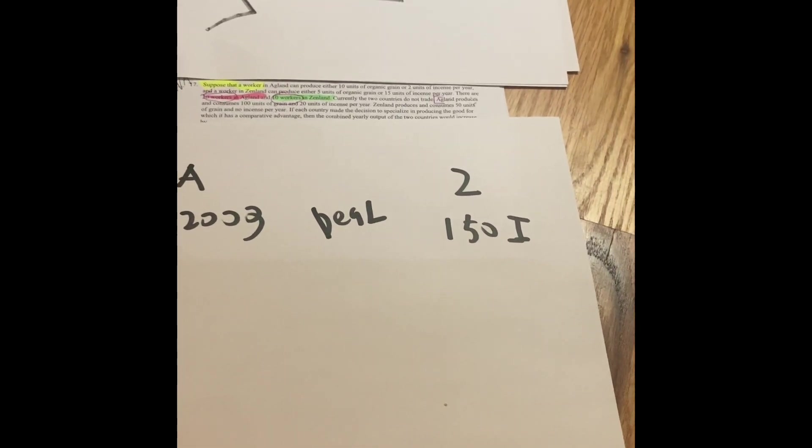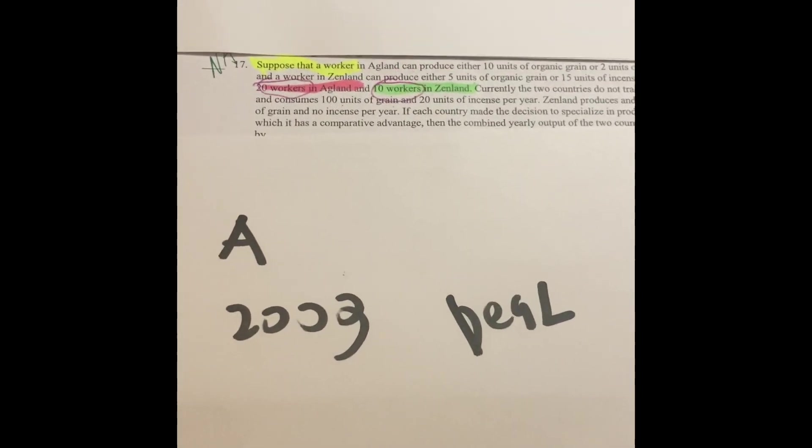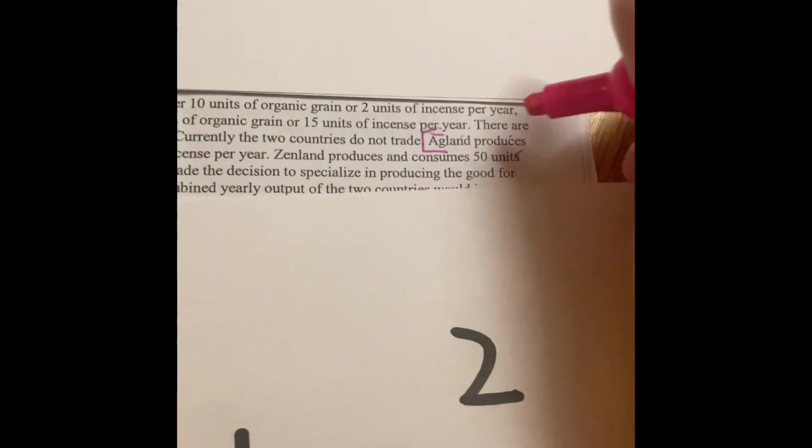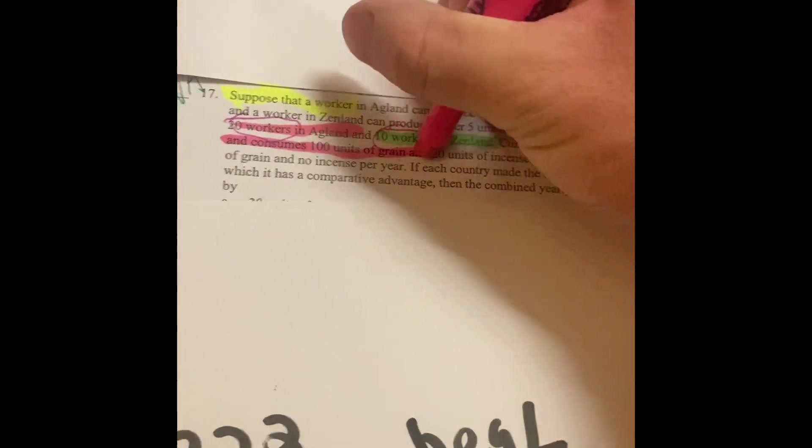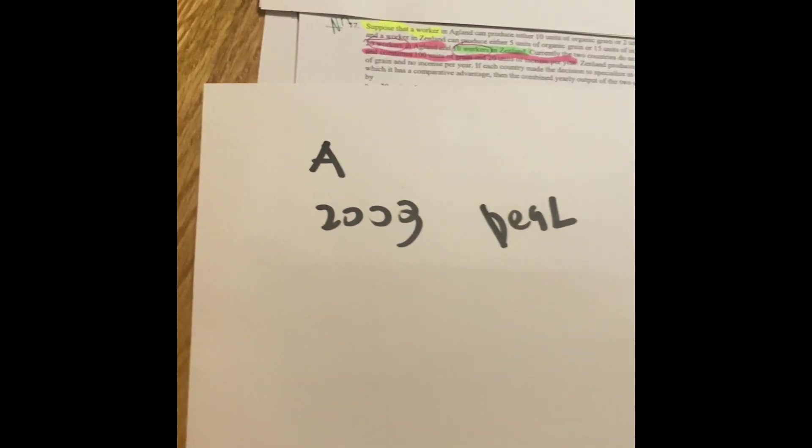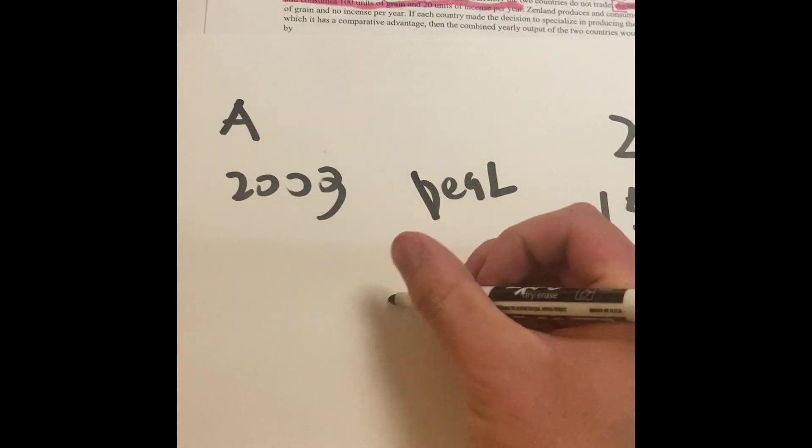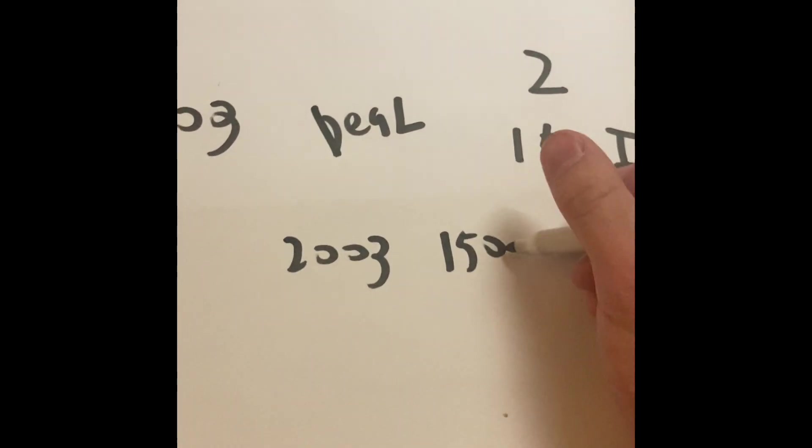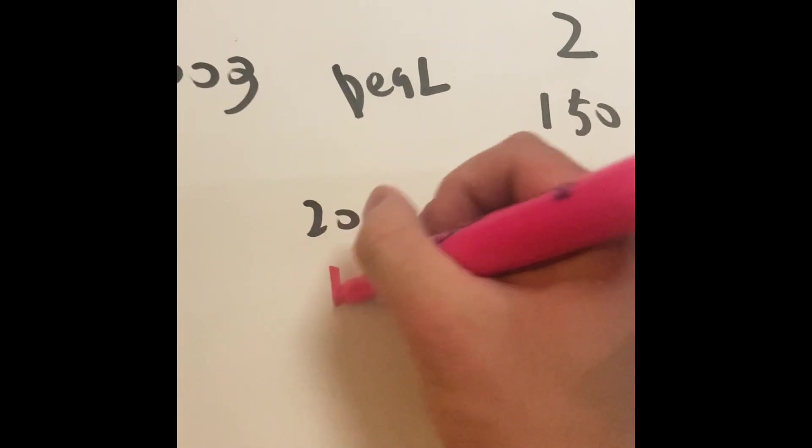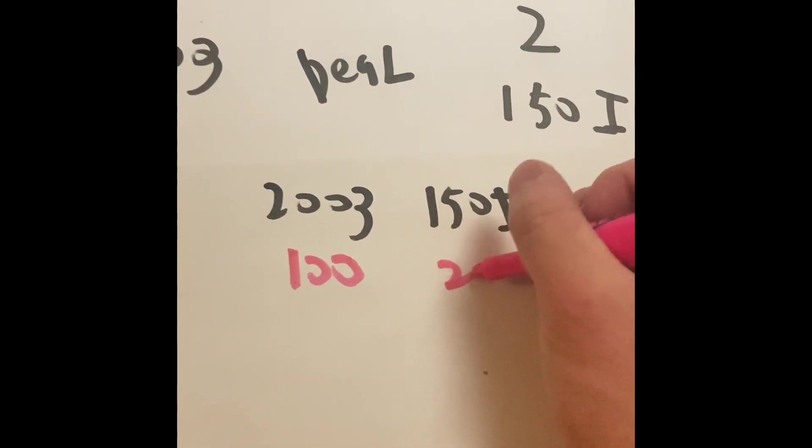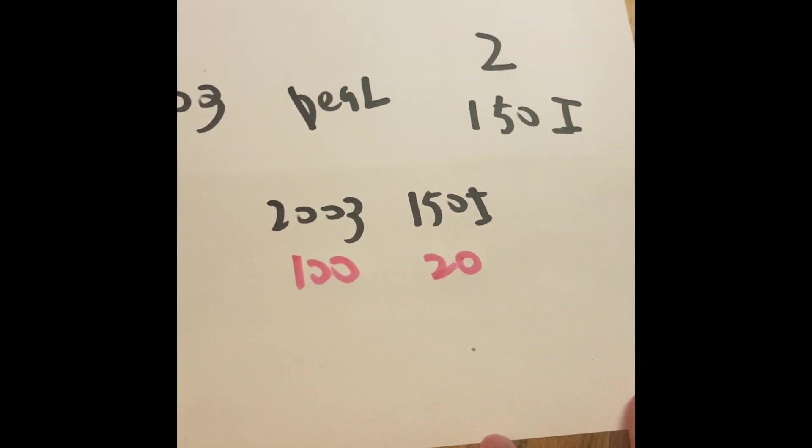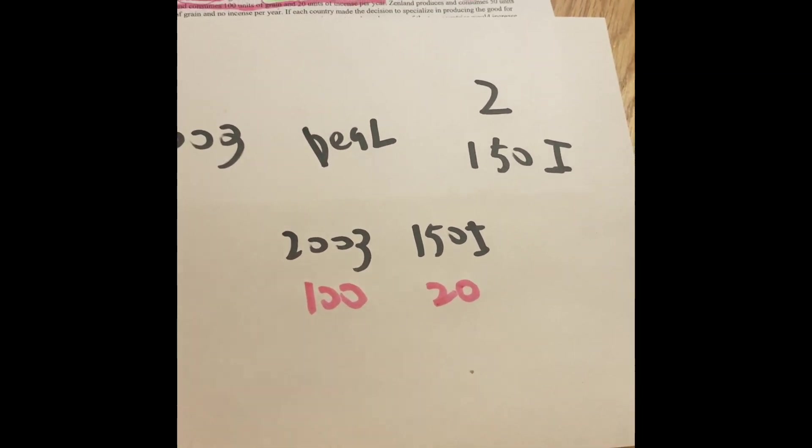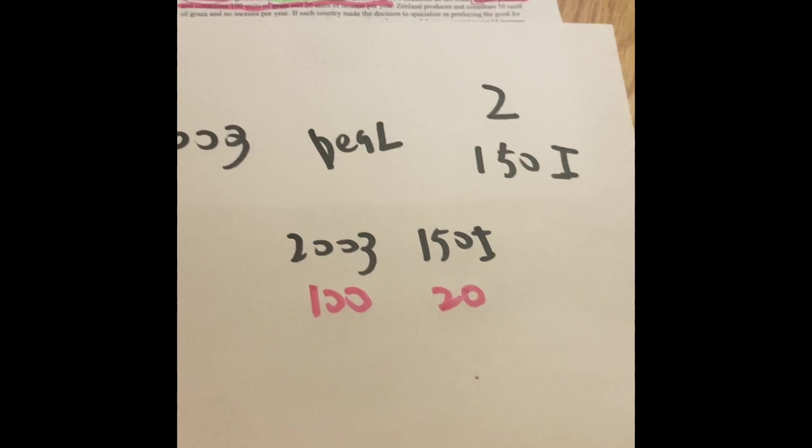So now let's take a look at Country A, or Agland. It says that Agland is going to produce and consume 100 units of grain and 20 units of incense per year. So we're going to subtract everything. We're going to do 200 grain, and we're also going to do 150 incense. So subtract by 100, and subtract by 20 is going to be for the consuming, or how much they consume for Agland, Country A.